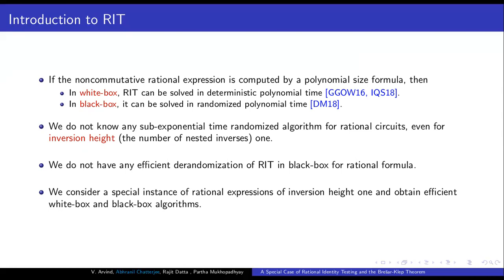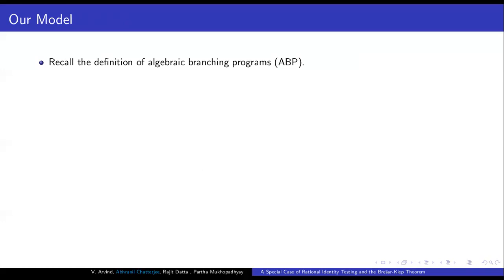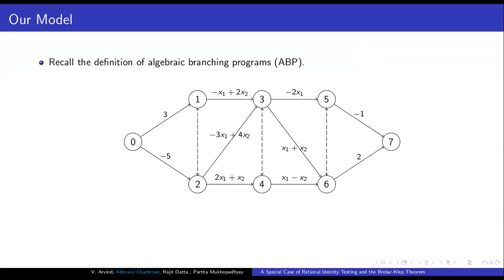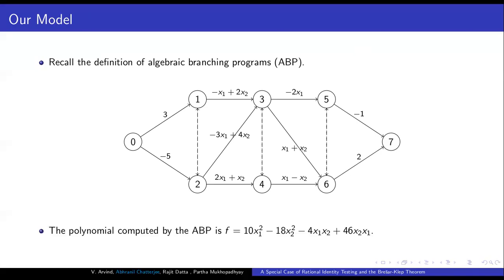Before discussing our model, let us recall the definition of Algebraic Branching Programs, or ABPs — the computational model that sits between formula and circuit. An ABP is a layered DAG where edges are only allowed between adjacent layers. There is a designated source node and a sink node. Each edge is labeled by a linear form. For any source-to-sink path, it computes the ordered product of the linear forms labeling that path. The final polynomial computed by the ABP is the sum over all source-to-sink paths.